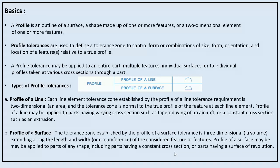For profile of a surface, the tolerance zone established is three-dimensional or a volume extending along the length and width or circumference of the considered feature or features. Profile of a surface may be applied to parts of any shape, including parts having a constant cross section or parts having a surface of revolution.